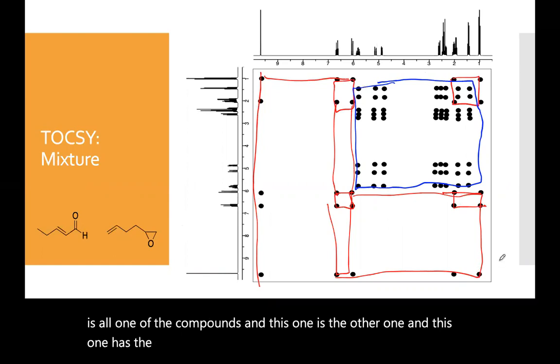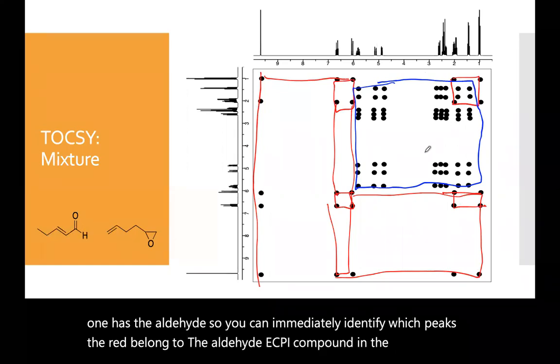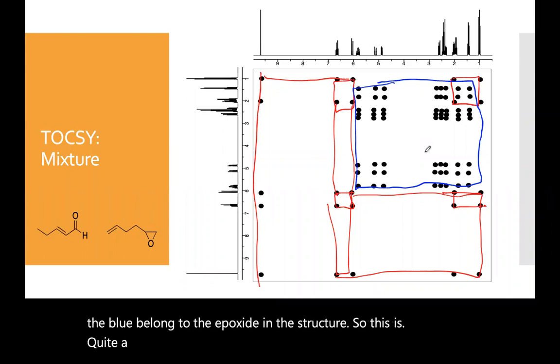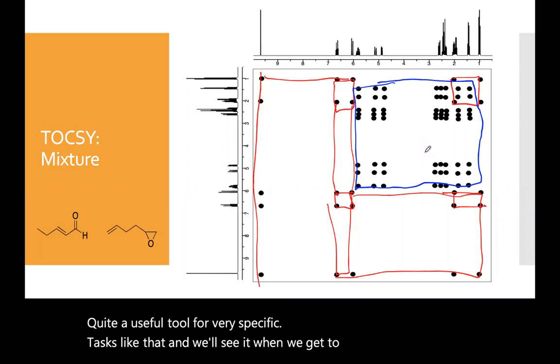So you can immediately identify which peaks, the red, belong to the aldehyde compound in the mixture. And the blue belong to the epoxide in the structure. So this is quite a useful tool for very specific tasks like that. And we'll see it when we get to monomers, polymers and maybe 3D NMR.